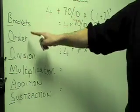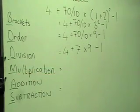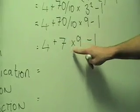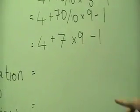The next stage in BODMAS is M for multiplication. As you can see here, we're multiplying 7 by 9. So that's what we have to do next.